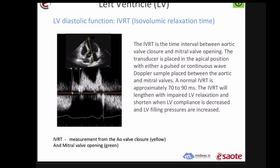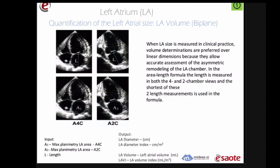Another diastolic measure is IVRT — isovolumic relaxation time — which is the time between when the aortic valve closes and the mitral valve opens. Normal is 70 to 90 milliseconds; as IVRT increases, diastolic dysfunction worsens, but then it starts decreasing again at severe stages. The left atrial volume is also used — patients with bad diastolic dysfunction should have an enlarged left atrium over time due to the atrium working hard against poor relaxation and dilating.